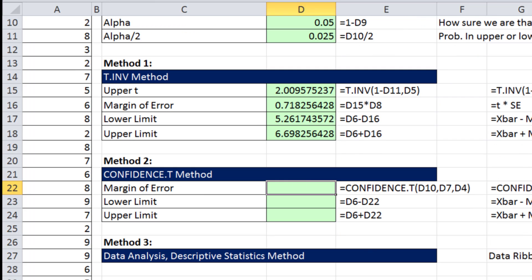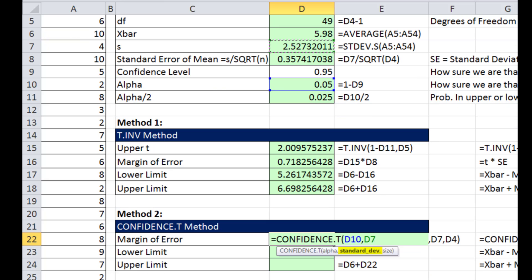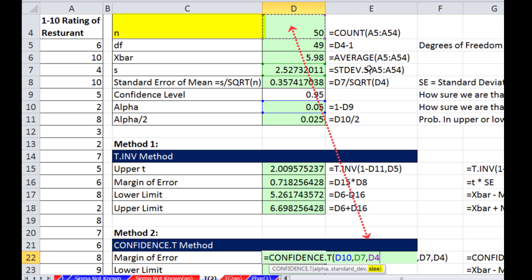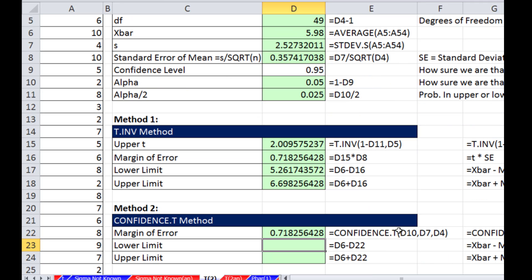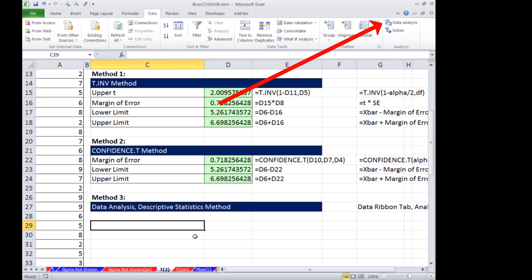Second method, our confidence dot t. Alpha, that's the whole alpha. Standard deviation, that is the s. Comma and the size. That's going to be our n. So we put in our n. And when we hit Enter, we get our margin of error. Now we can calculate the lower. There's the mean minus our margin of error. Here's the mean plus our margin of error.